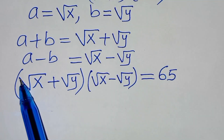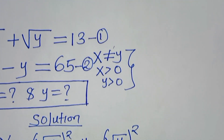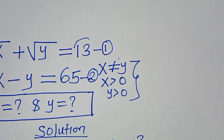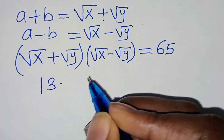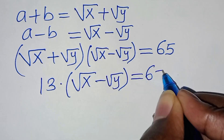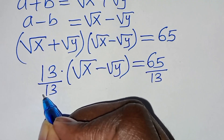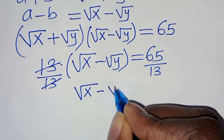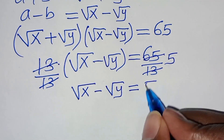Now, square root of x plus square root of y is what we have in equation 1, which equals 13. So let's substitute 13: we have 13 multiplied by (square root of x minus square root of y) equals 65. Dividing both sides by 13, we get square root of x minus square root of y equals 65 divided by 13, which equals 5.